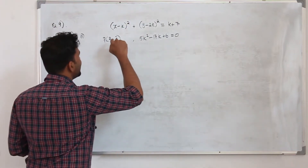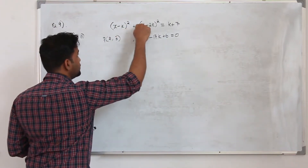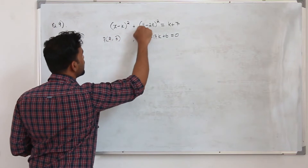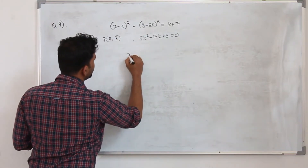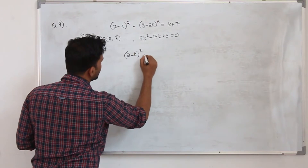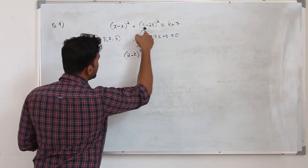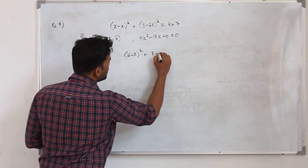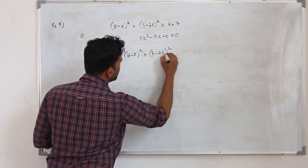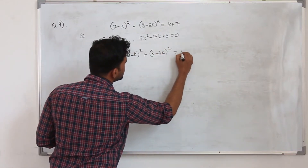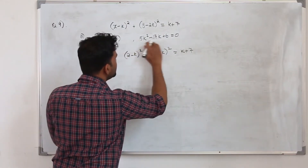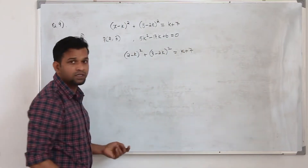Whenever they say a point lies on the curve, just replace x by the x-coordinate and y by the y-coordinate. So it will be 2 minus k whole square plus, with y-coordinate 3, giving 3 minus 2k whole square equals k plus 7. Simplify this and you will get the quadratic equation.